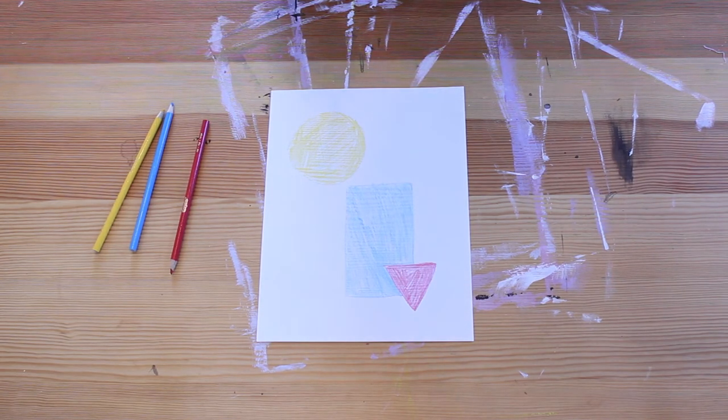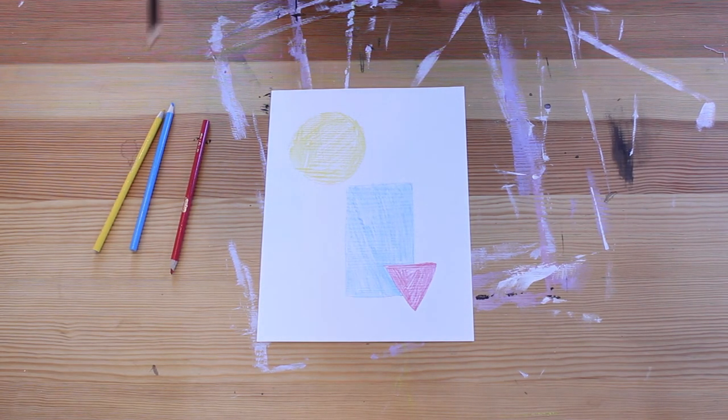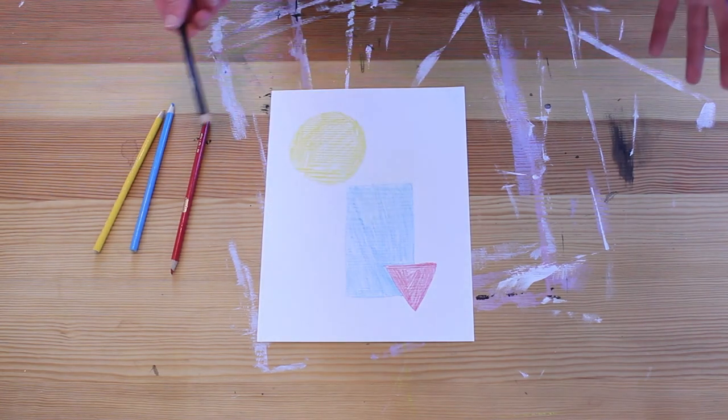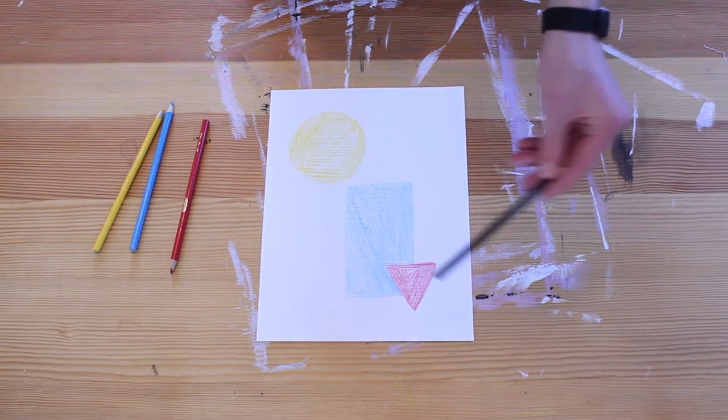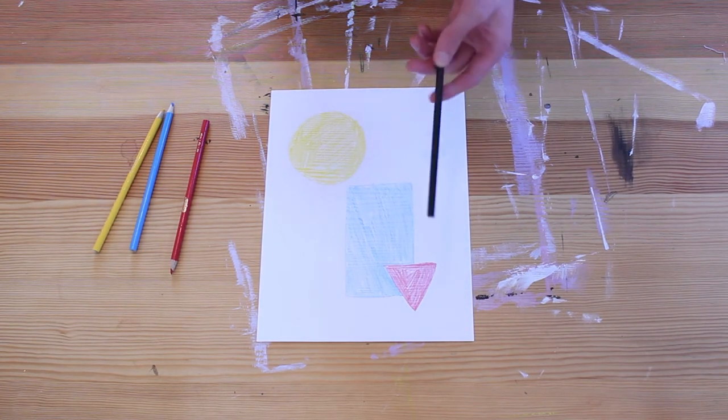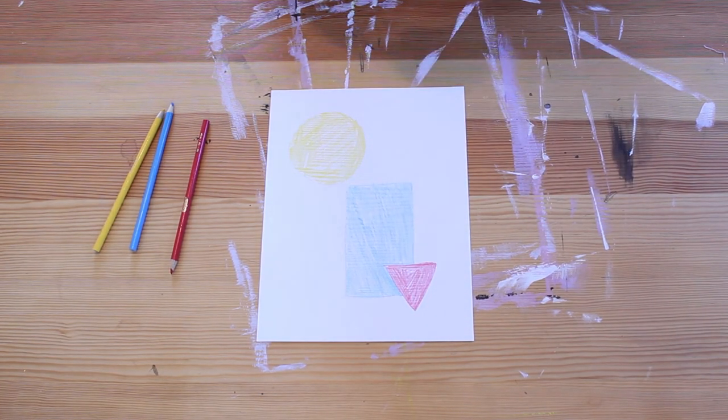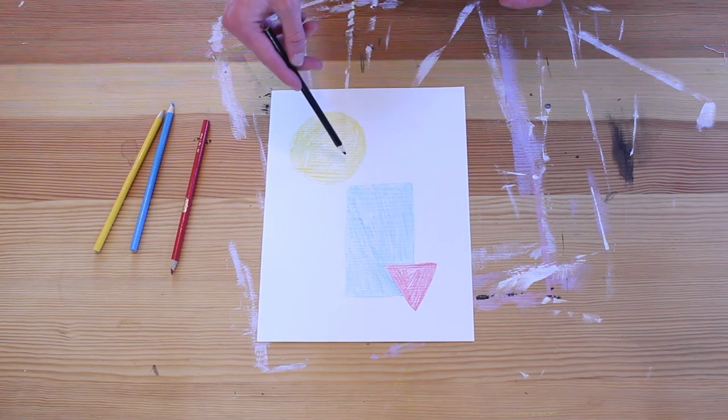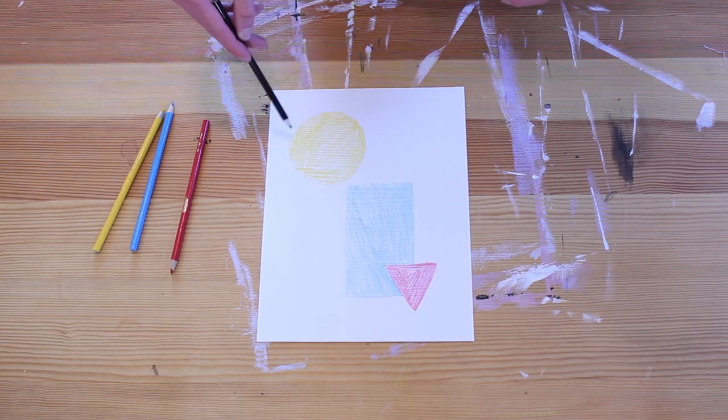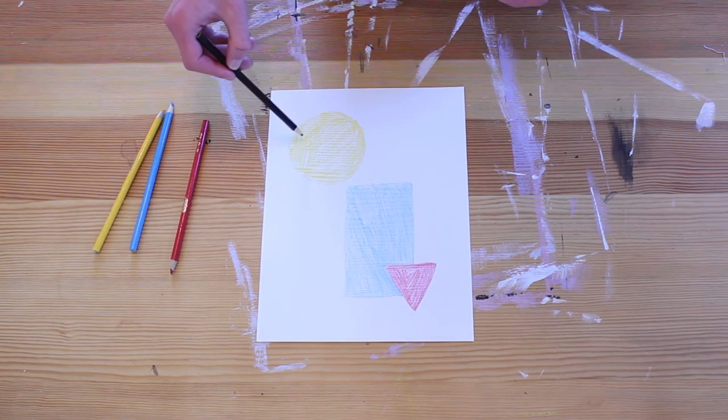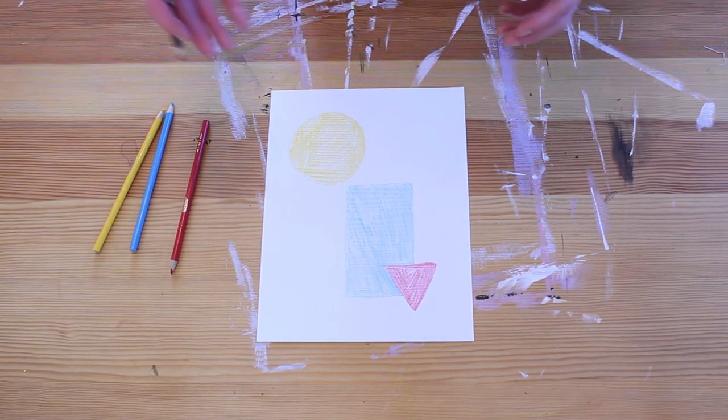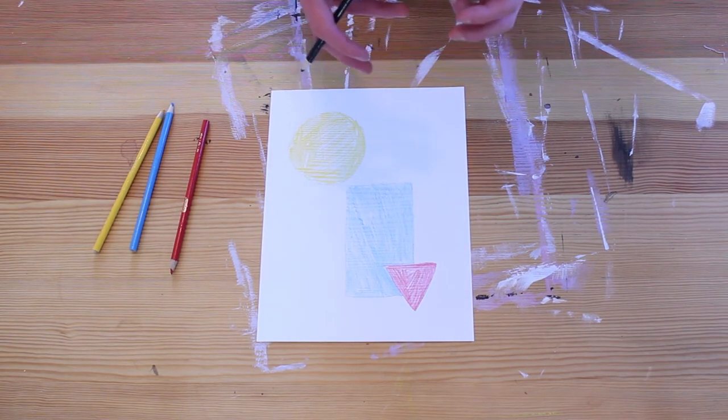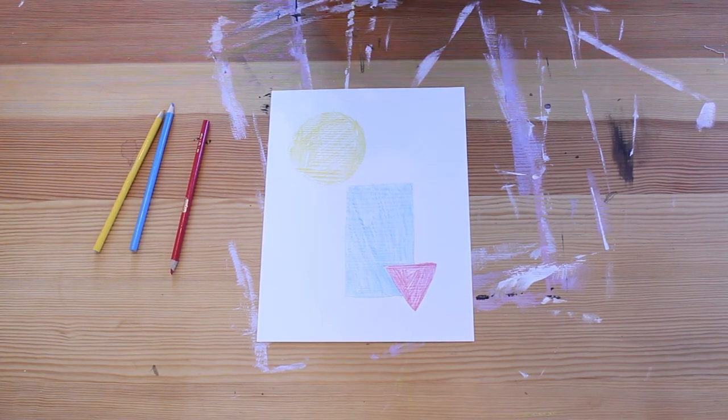The next step is to decide what we are going to draw inside of these shapes. Now a good way to decide what you're going to draw is try and think of the colors that you used and think of what they remind you of. Remember, these drawings inside of these geometric shapes should be organic, they should have lots of curves to them, they should flow really nicely. So try and think of things that you would find in nature that relate to the colors that you've chosen.